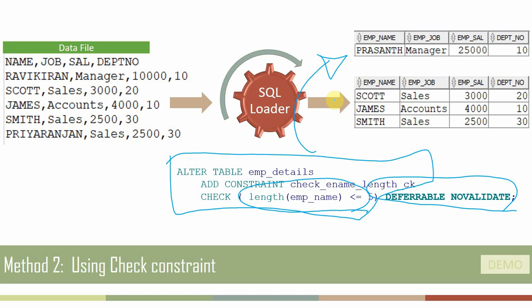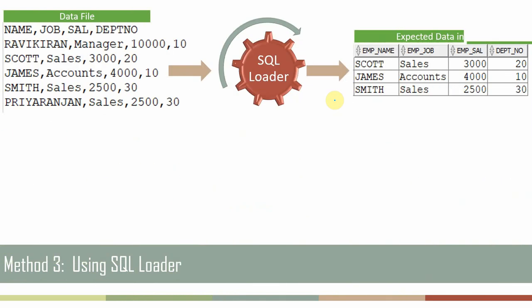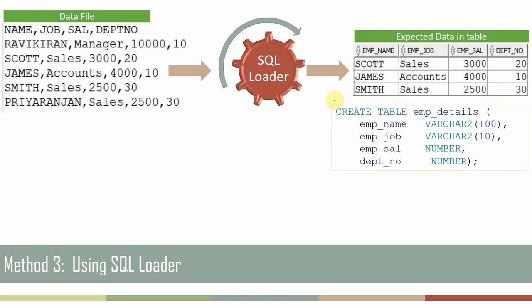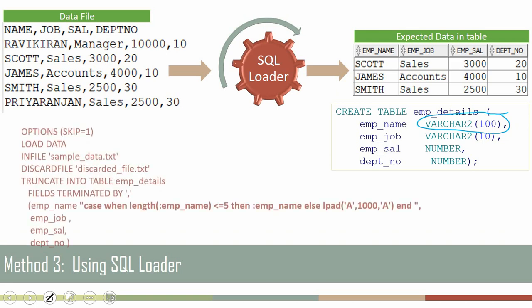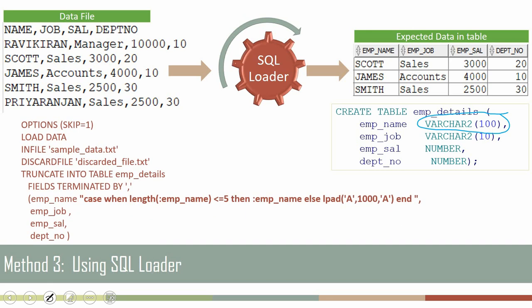So in the first method we modified the data type of the table to restrict the length to five characters, and in the second method we created a check constraint. But if you are not allowed to modify the column length or create a check constraint, we have a third method: implementing the entire logic in the control file itself, without touching the table at all. The table will have data type VARCHAR2(100) and may already contain existing records.